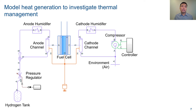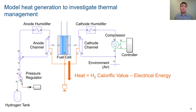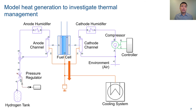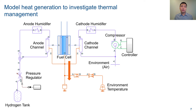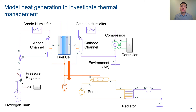The last detail is to model heat generation based on the calorific value of the hydrogen fuel minus the amount converted to electrical energy. Thermal management is important because higher temperatures allow for better efficiencies but will dry out the membrane. Therefore, you will need to design a cooling system to dissipate heat, which can have its own level of detail. For example, you can start with basic thermal conduction blocks, and then switch to a liquid cooling model with a pump and a radiator that exchanges heat with the environment.